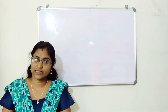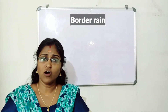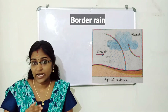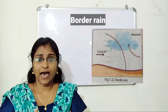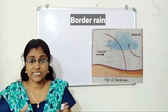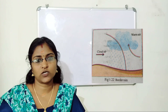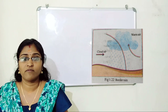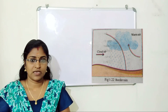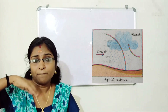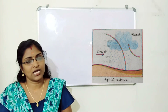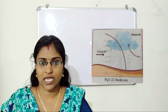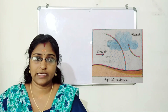The last topic is border rain. There is always a difference in atmospheric temperature between land and sea. Land heats and cools very quickly, but the sea takes a lot of time. When the air over the sea comes in contact with air over the land in coastal regions, the warm air is pushed up, causing cloud formation and rainfall. This type of rainfall is known as border rain.